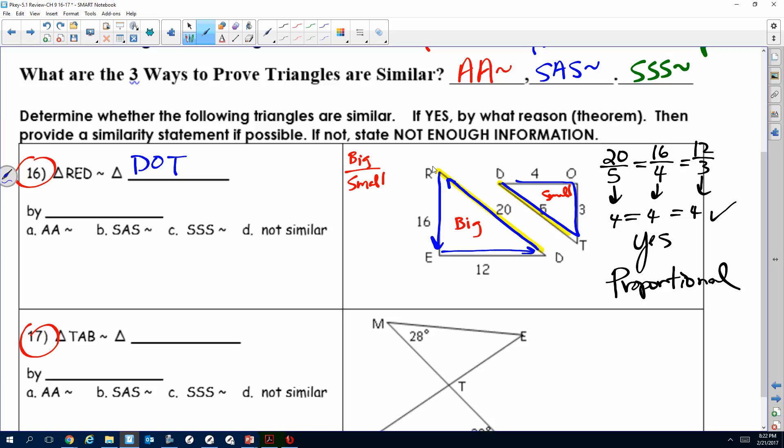How are they similar? Yes, by side-side-side similarity, because we had three sides proportional, meaning they have the same ratio, same cross product, same numbers.